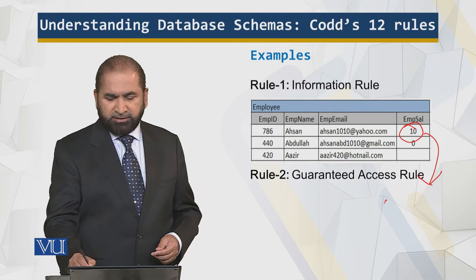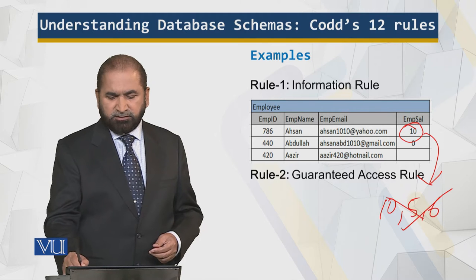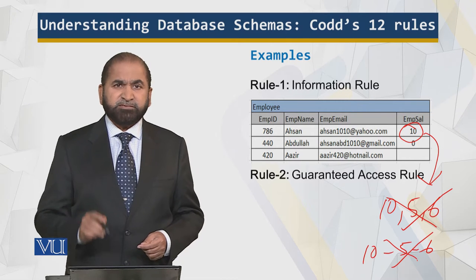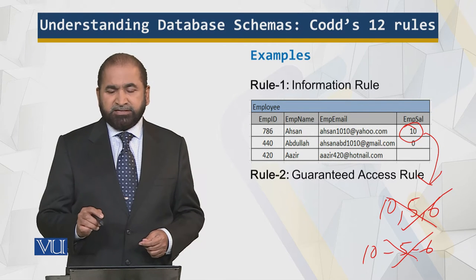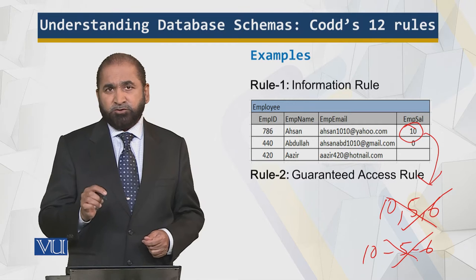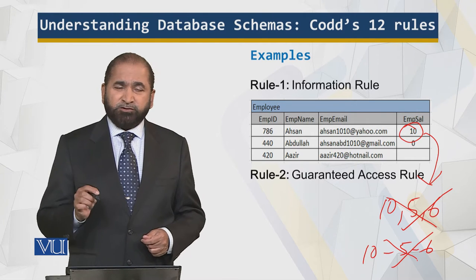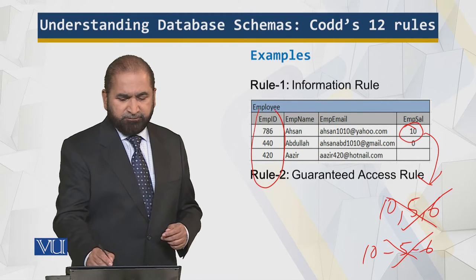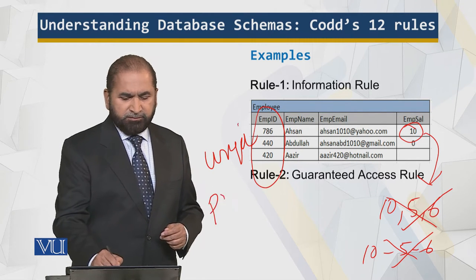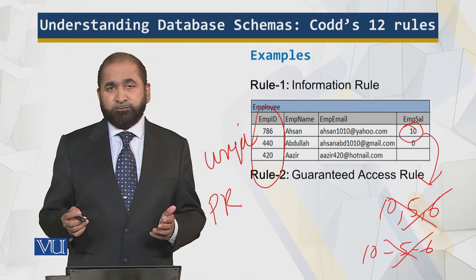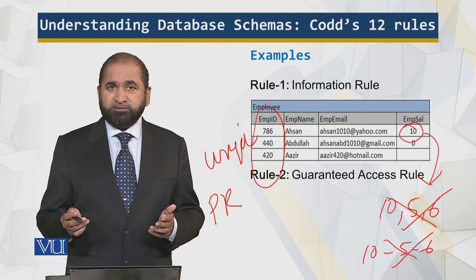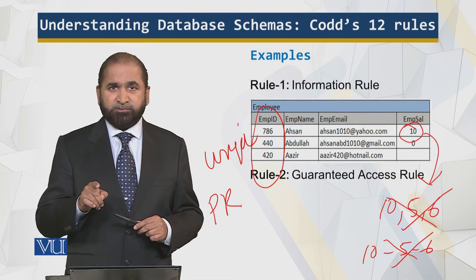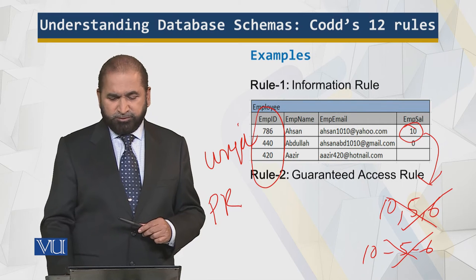If I store something like '10, 5, or 6' that is not allowed, or '10-5-6' that is also not allowed. That is the information rule. Then there is the guaranteed access rule. I know the table name — employee. If I would like to know the details of a certain employee, I give the primary key, I give the column names, I give the table name, and I get the answer. It should be guaranteed access.